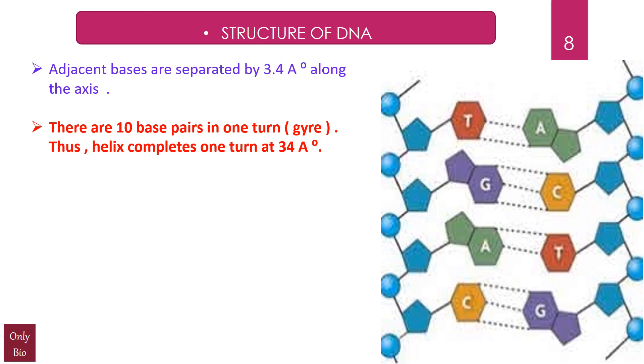There are 10 base pairs in one turn, that is gyre. Thus, helix completes one turn at 34 Angstrom units. So 3.4 times 10 is obviously 34 Angstrom units. This is the reason why we say there are 10 base pairs and the helix completes one turn at 34 Angstrom units. Friends, again, this is important to know because at times there are a few numericals asked on this particular concept.